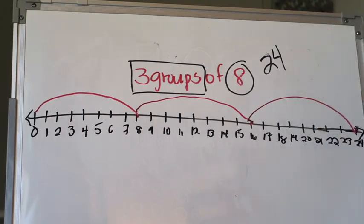That's the second way you might see a multiplication problem presented — on homework, a quiz, or a test. Those were your two examples for multiplying using a number line. As a reminder: when using a number line to multiply, the first factor tells you how many jumps you will make, and the second factor tells you how many steps to take within each jump to complete that jump.